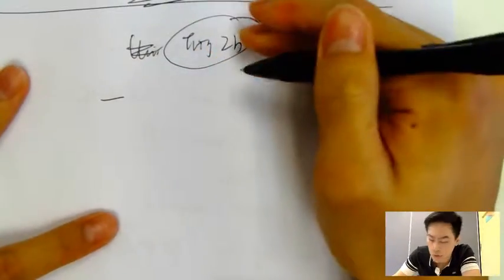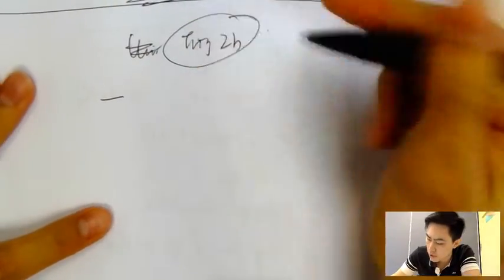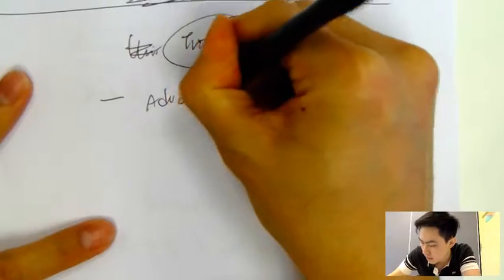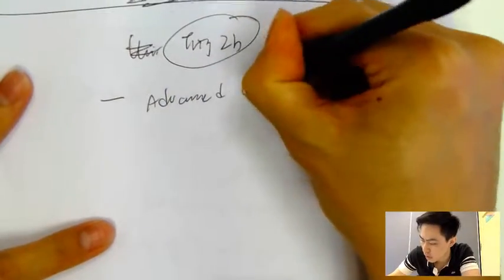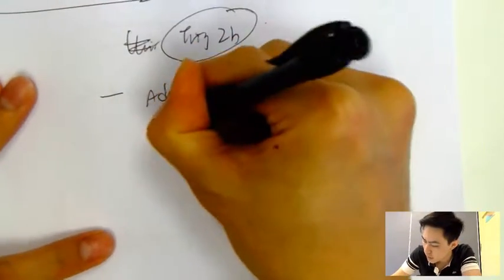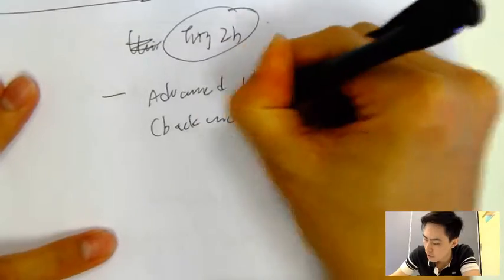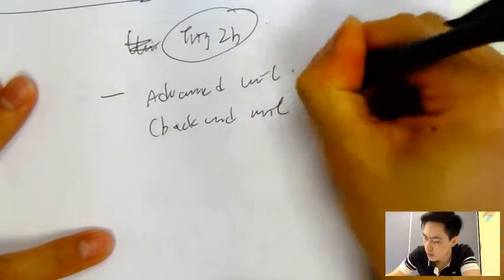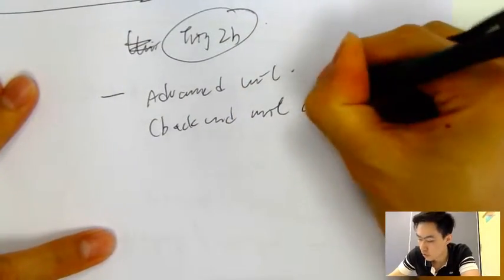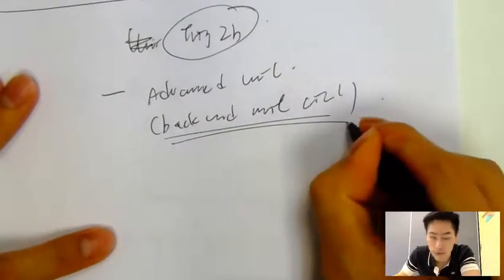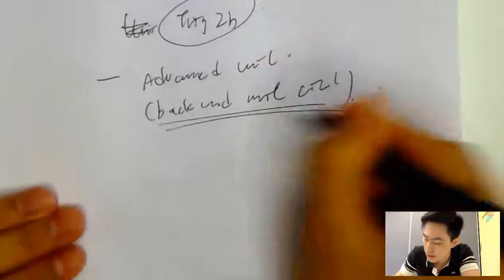2B notes. So after you have learned 2A, the unit circle stuff, we'll move on to advanced unit circle. For example, you'll see some kind of backward unit circle questions, and I'll teach you to tackle these kinds of questions.